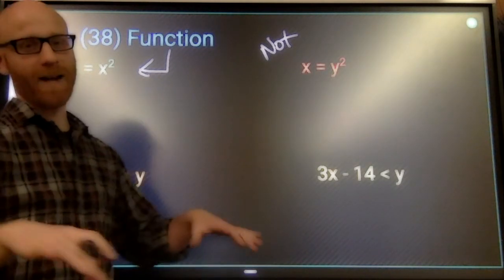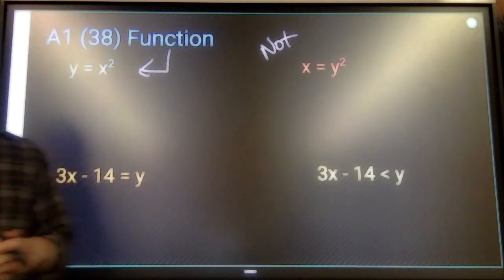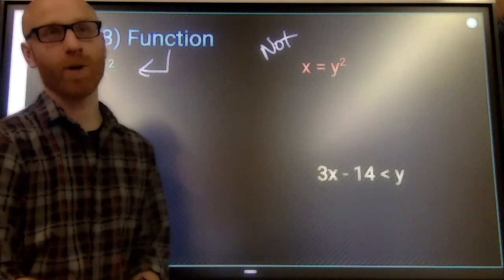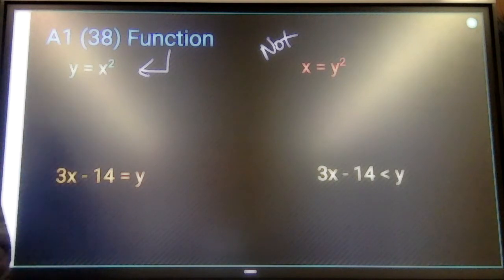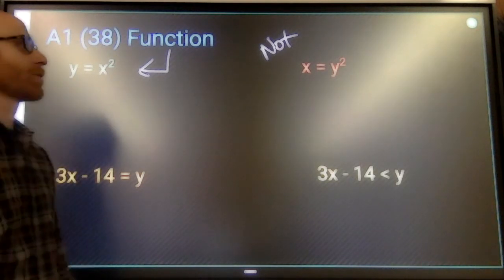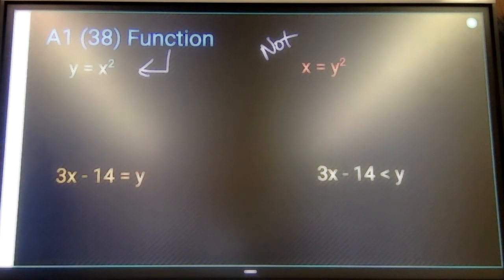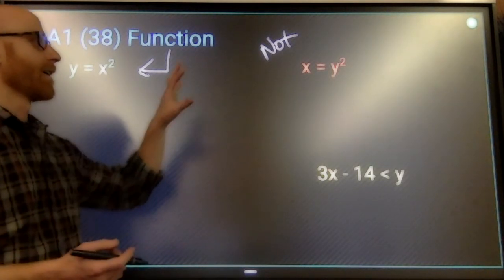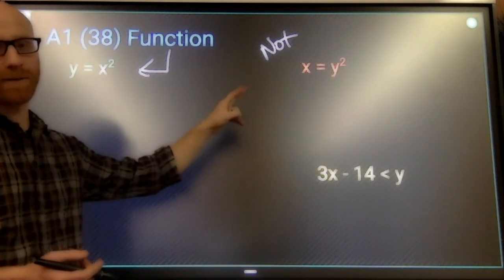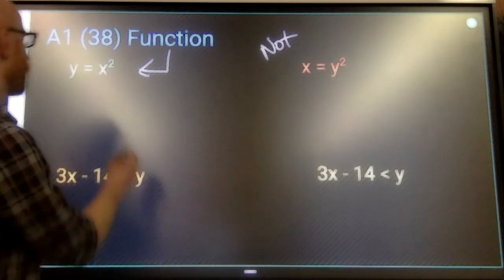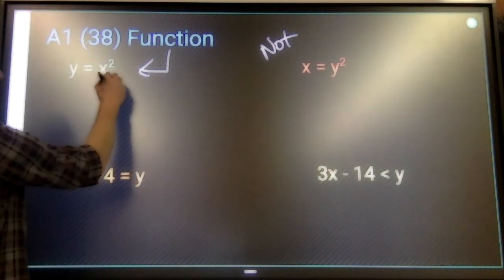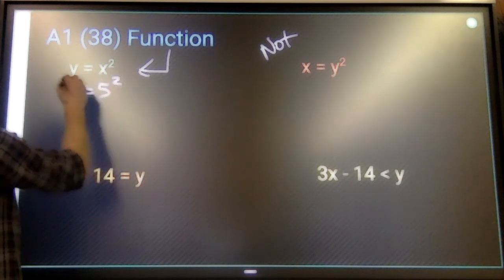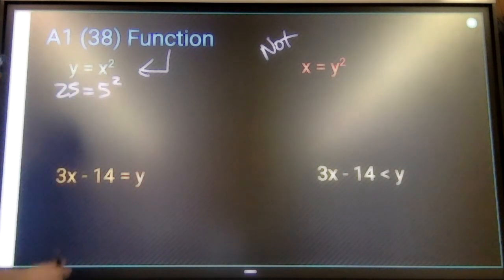Basically, at our level, algebra one level, what you have to do is try a couple of different things. Try a negative number. Try a very small number. Try a very big number. See if there's a way for you to come out with two different answers. So if I say five squared, there's only one possible answer. Five squared is 25.